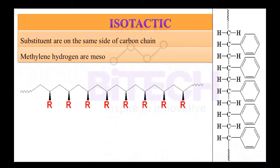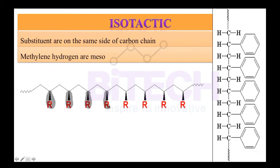Let's discuss isotactic polymers, where substituents are lying on the same side of the carbon chain. For example, if we consider the R groups, they are all lying on the downward side — that is, towards your eye — so all substituents are on the same side.